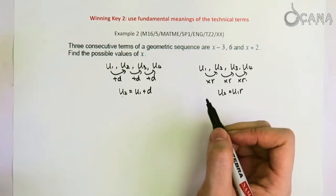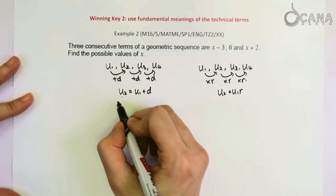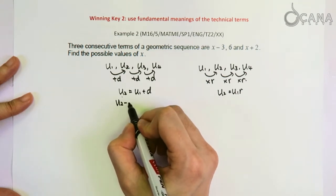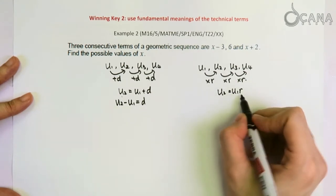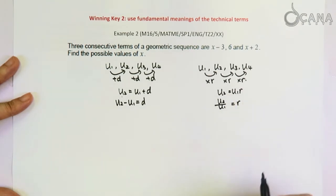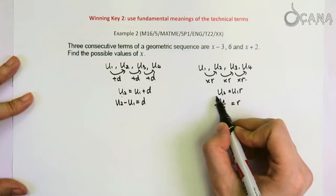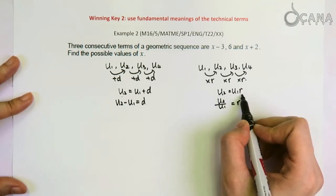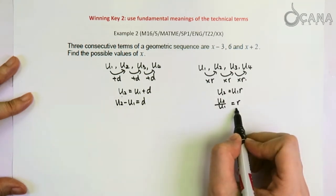But one form of expressing the same equation that we always forget about is this. D stands for difference, and difference is obtained by doing subtraction, and ratio is obtained by doing division. So besides expressing the relationship from a term with its next term and the common difference or common ratio in this form, we can also express the relationship in this form as well.